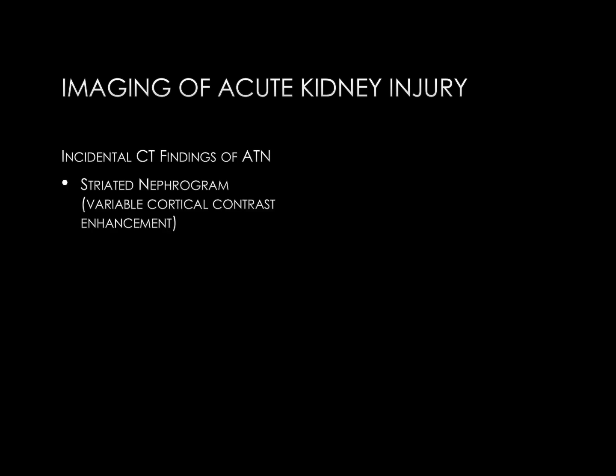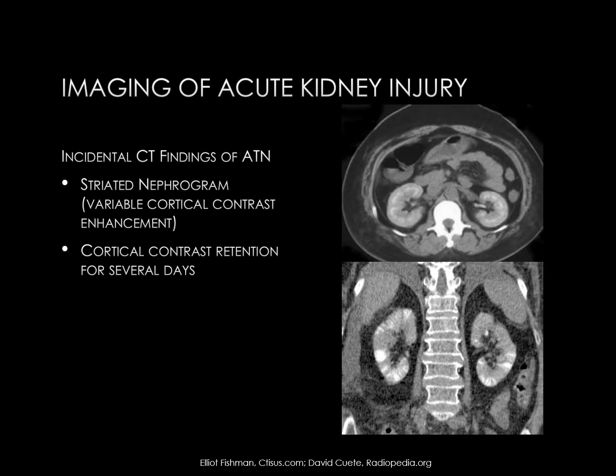Finally, here are some incidental CT findings of acute tubular necrosis. These CT scans would be done for some other reason, with these being incidental findings in the kidneys. There are two patterns of ATN on CT: one is a striated nephrogram, which is variable cortical contrast retention with striations or stripes of hyperdensity and hypodensity; the other would be diffuse cortical contrast retention for several days after administration. Both CT examples are non-contrast enhanced. The upper image shows diffuse cortical contrast retention, and the lower image shows a striated nephrogram pattern with linear stripes of hyperdensity.